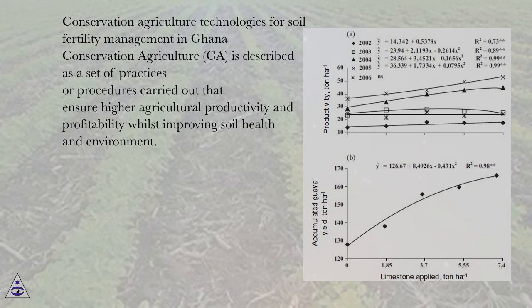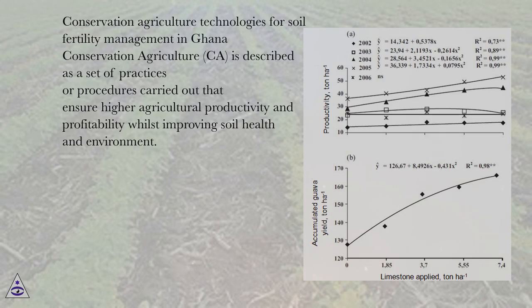Conservation Agriculture Technologies for Soil Fertility Management in Ghana. Conservation Agriculture, CA, is described as a set of practices or procedures carried out that ensure higher agricultural productivity and profitability whilst improving soil health and environment.